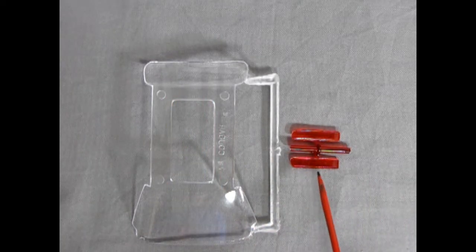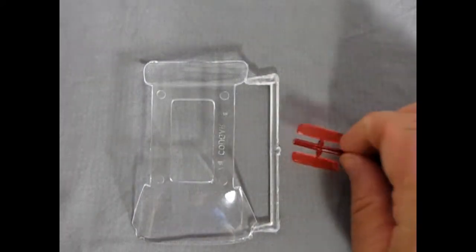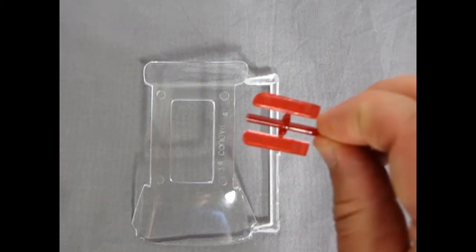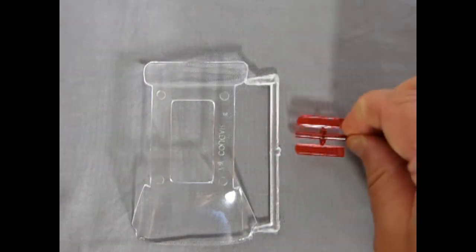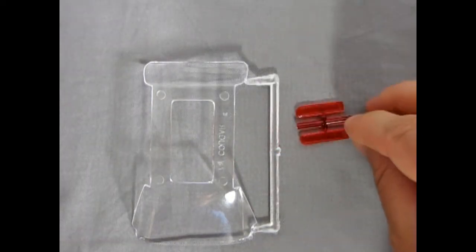And here we have those nice mercury tail lamps. And if I bring them up to the camera, you can see that they have a bit of a grille going on inside them, which is prototypical to the actual car.